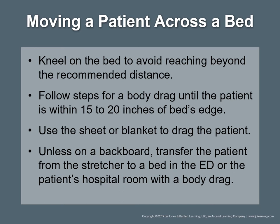Moving a patient across a bed: kneel on the bed to avoid reaching beyond the recommended distance. Follow the steps for a body drag until the patient is within 15 to 20 inches of the bed's edge, then complete the drag while standing at the side of the bed. Use the sheet or blanket to drag the patient — roll the bedding under the patient until it is about 6 inches wider than the patient, then pull on the rolled bedding smoothly and evenly to glide the patient to the bedside. Be on the lookout for soiled sheets and use proper protective equipment. Unless the patient is on a backboard, transfer the patient from the stretcher to the bed using a body drag. The stretcher should be the same height as the bed and held firmly against its side.